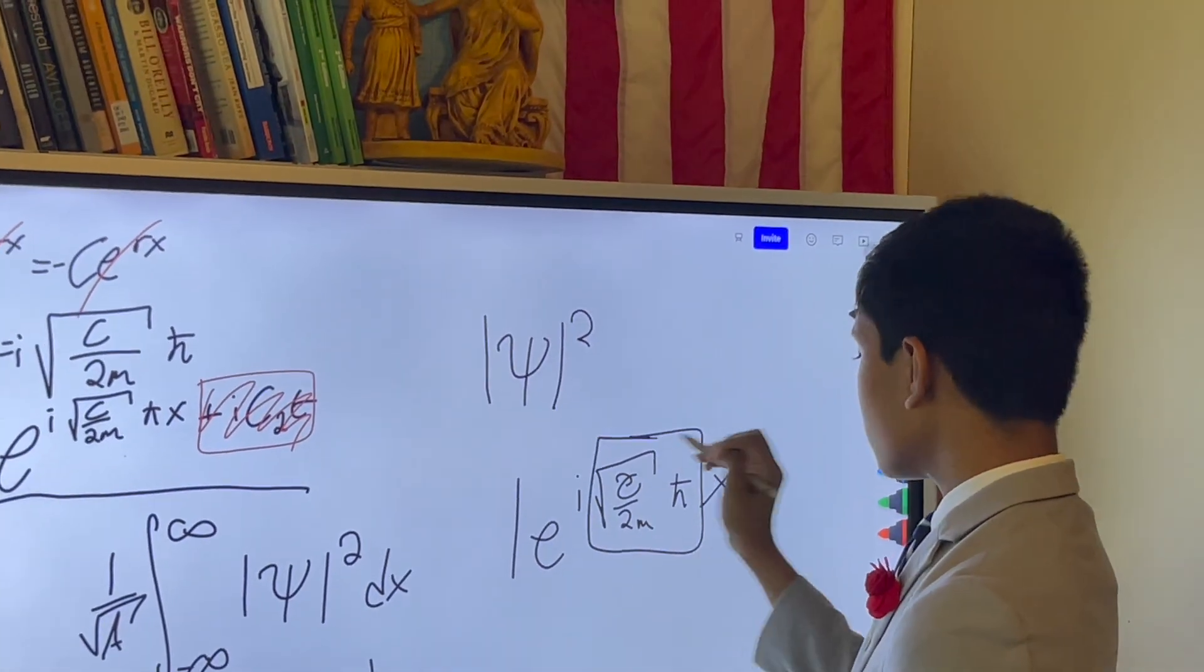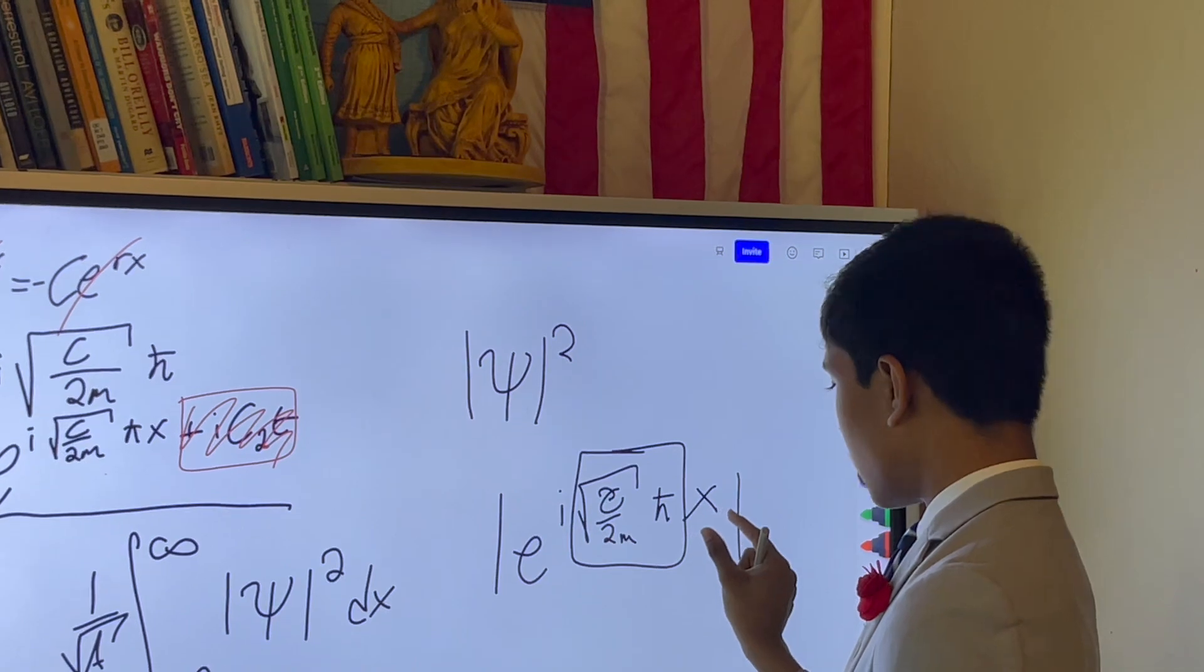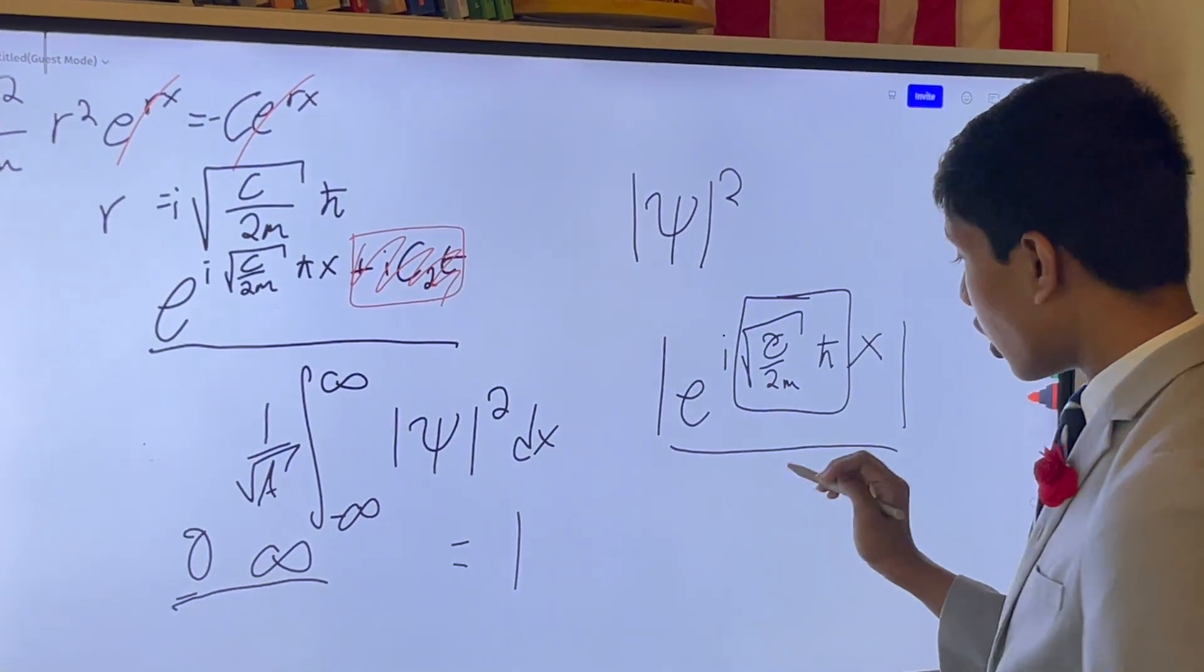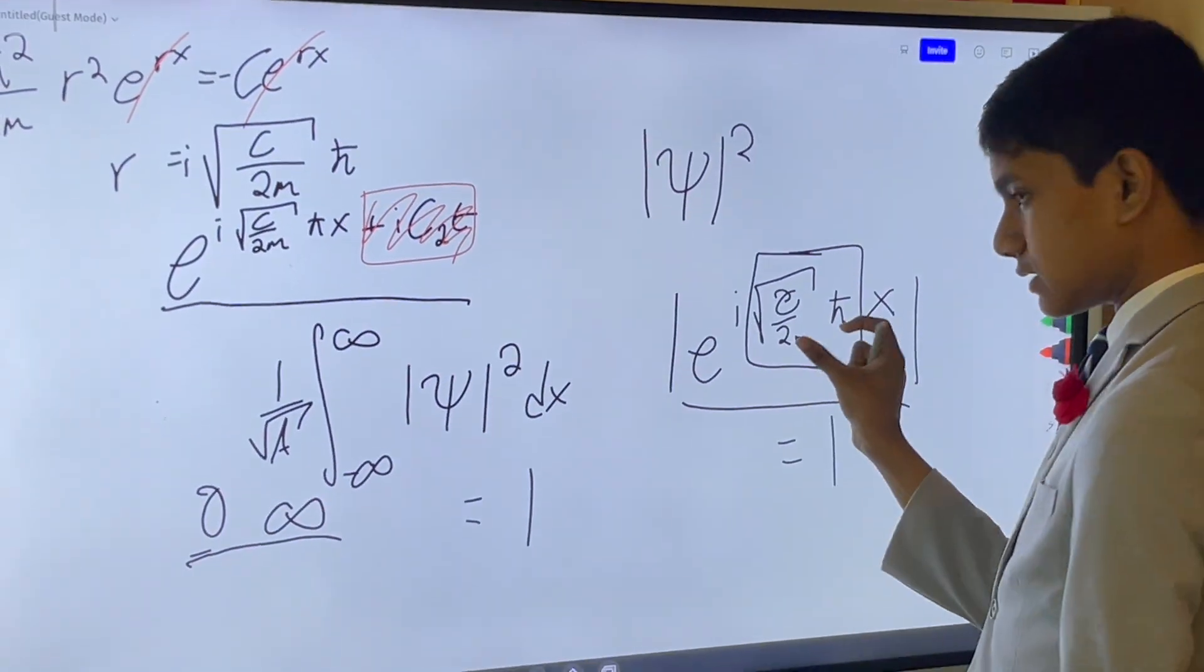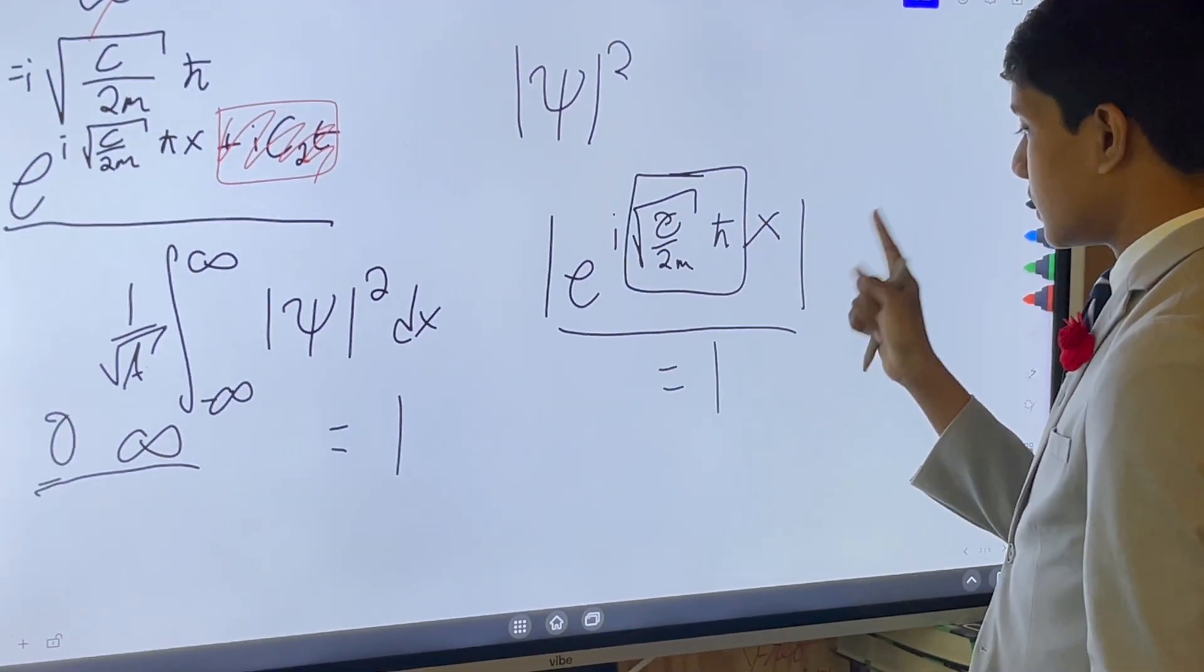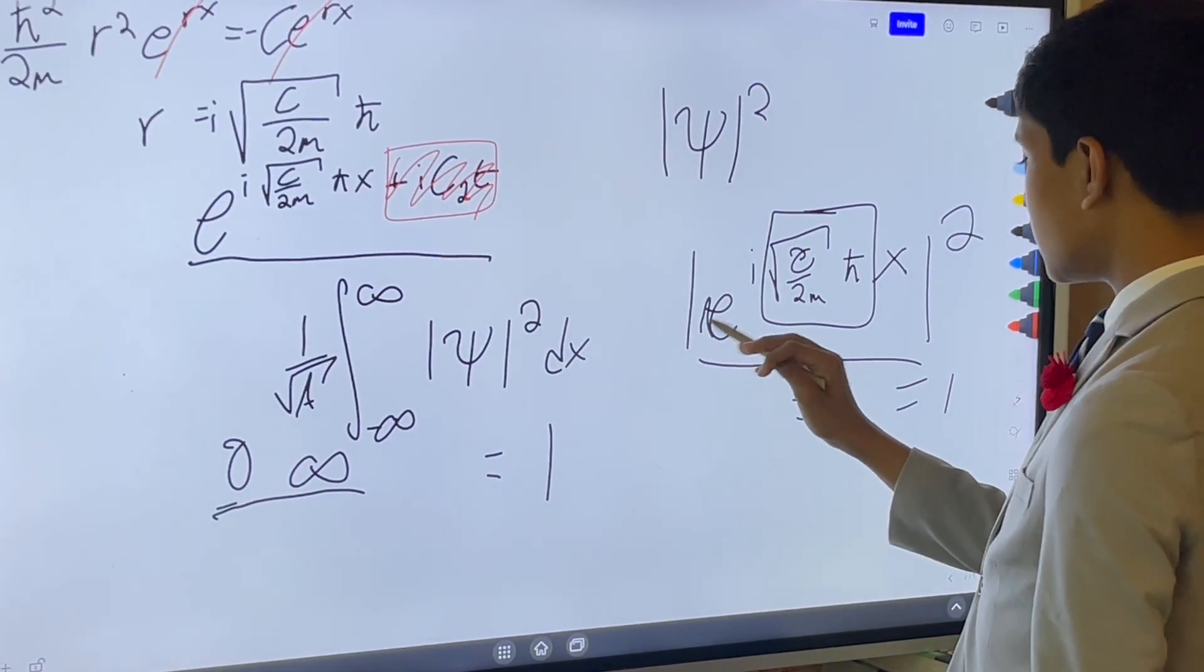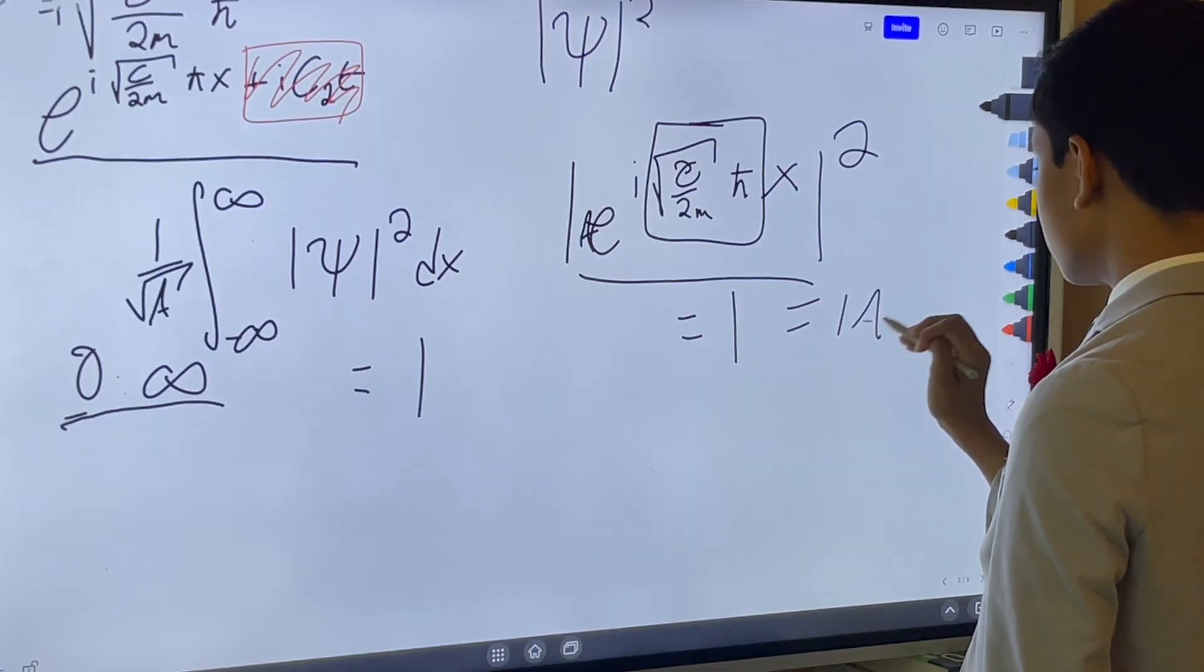Well, this doesn't matter because it's just a constant multiplier to x, and the modulus of e to the i x is always equal to 1. That's why this doesn't matter. And so, when you square it, it's still going to be equal to 1. So, if you add on an amplitude, it's going to be equal to the amplitude squared.